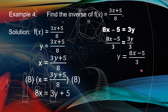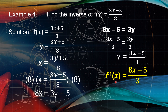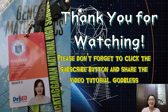Our last step is to change y into f raised to negative 1 of x: f⁻¹(x) equals 8x minus 5 over 3. Therefore, the inverse of f(x) equals 3x plus 5 over 8 is f⁻¹(x) equals 8x minus 5 over 3. Thank you for watching! Please don't forget to click the subscribe button and share the video tutorial. Thank you! Until next time!